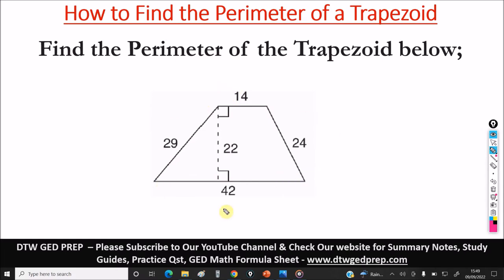So the perimeter of this trapezoid is the addition of 14 plus 24 plus 42 plus 29, and when we sum all this together we're gonna get 109.